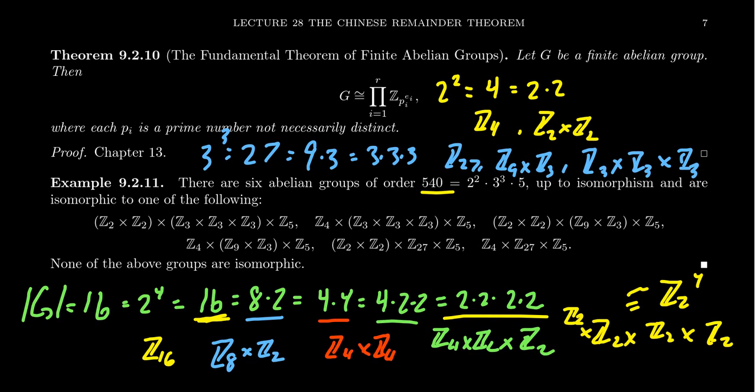How many groups of order 5 are you going to get? Well, there's just the one, Z5 is the only way you can do that since it's a prime number. And so when you put this together, notice that you have 2 abelian groups of order 4, you're going to have 3 abelian groups of order 27, and you're going to get 1 abelian group of order 5.